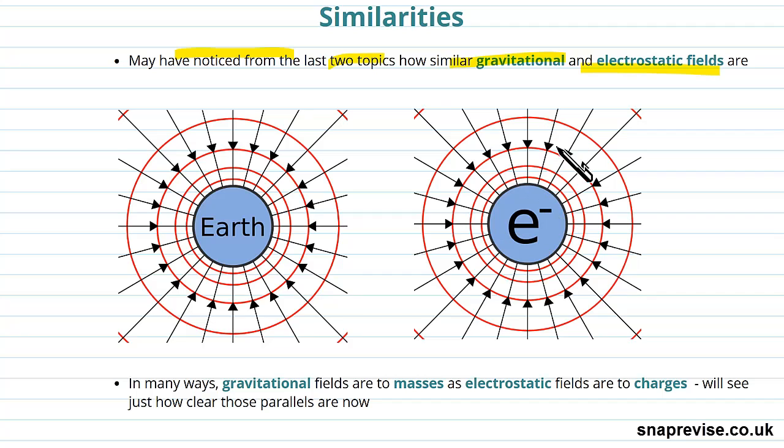Field lines show the path a positive charge would move toward the electron, just as these show the path that a mass would follow. The equipotentials are exactly the same, exactly the same image. We just labeled one with Earth and we've labeled the other with e minus.